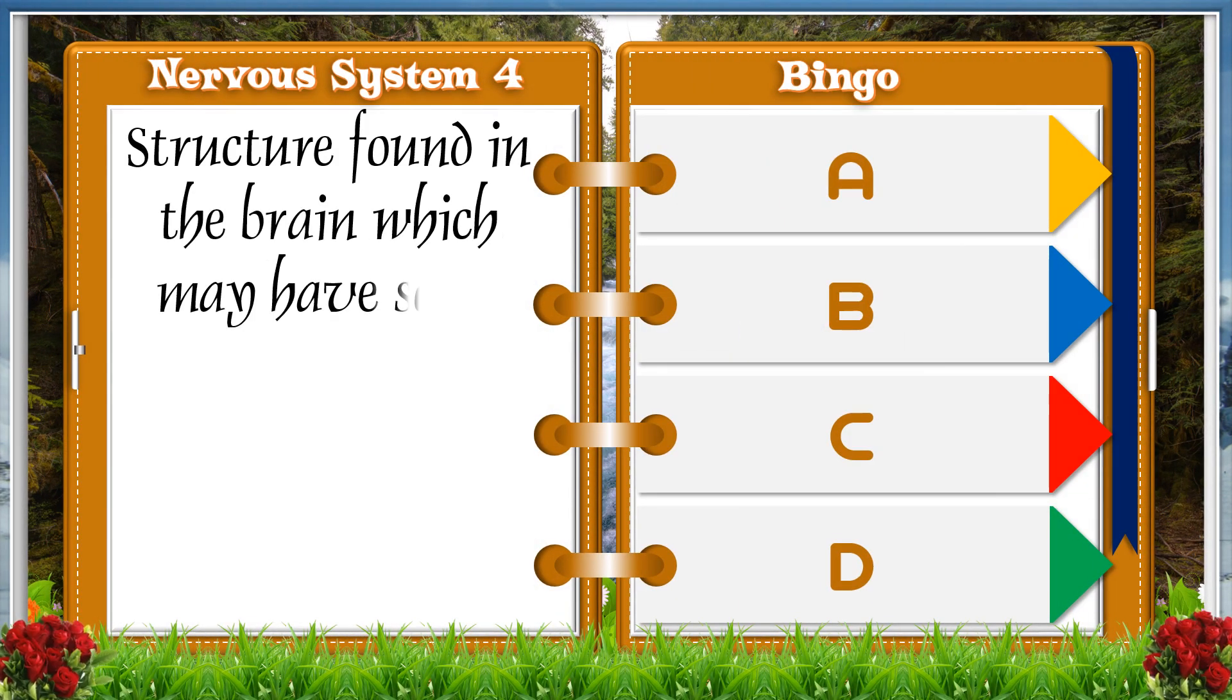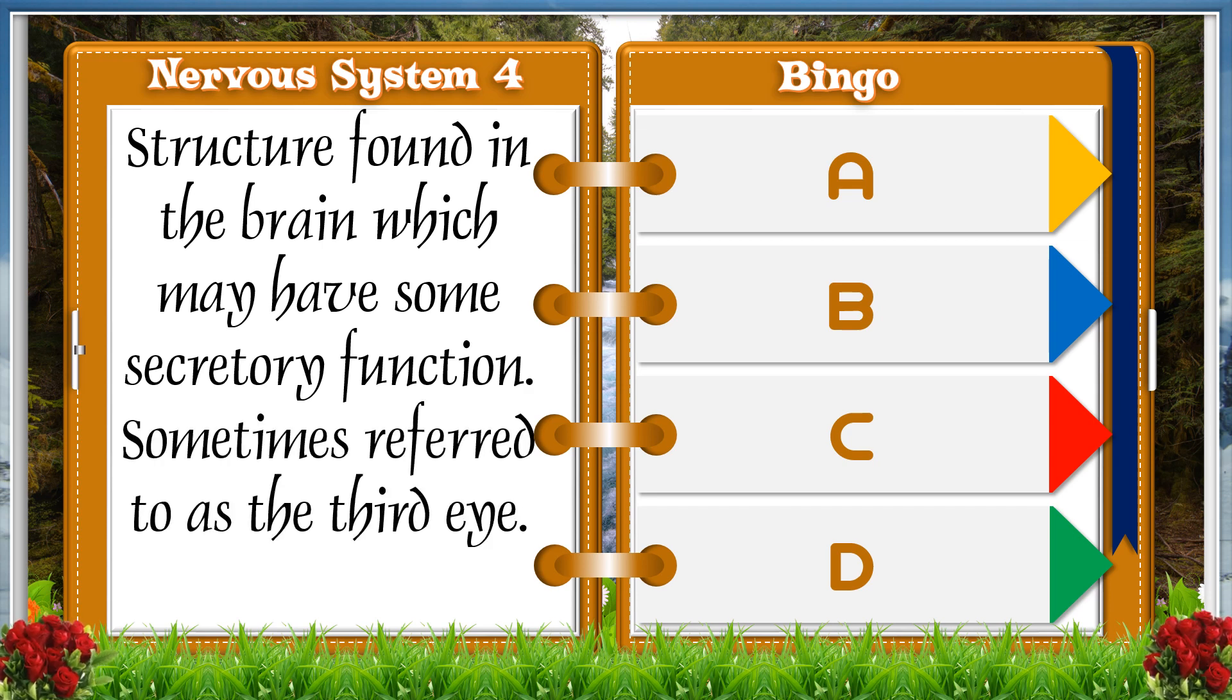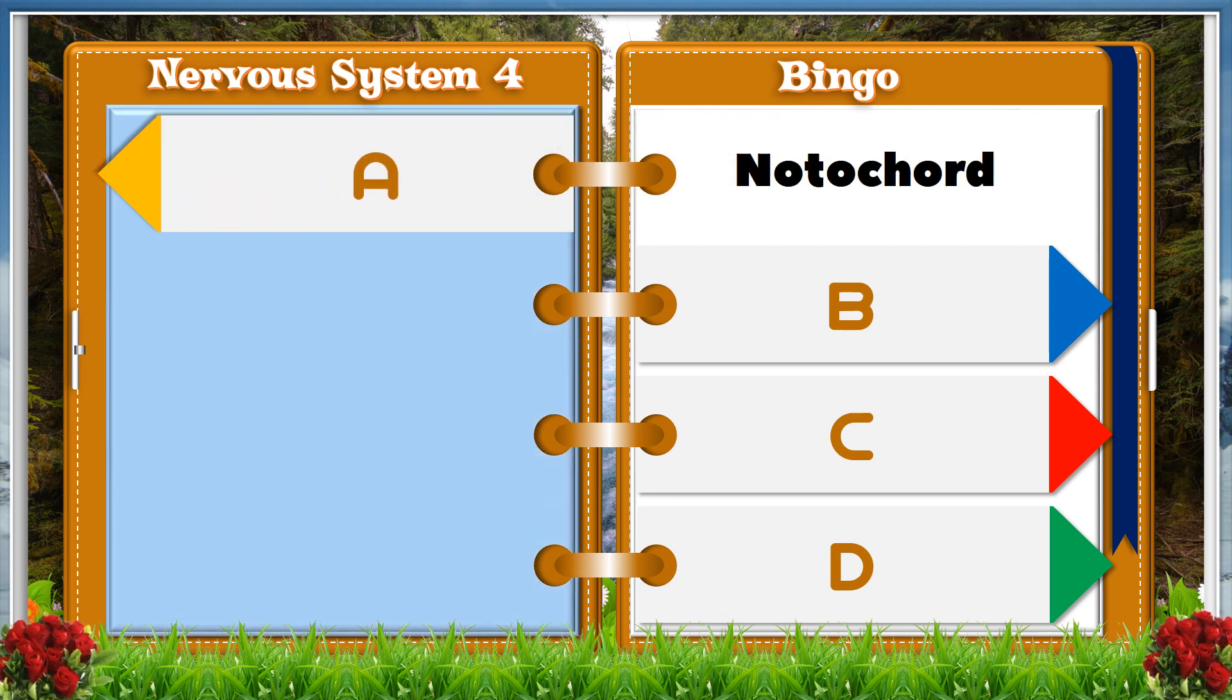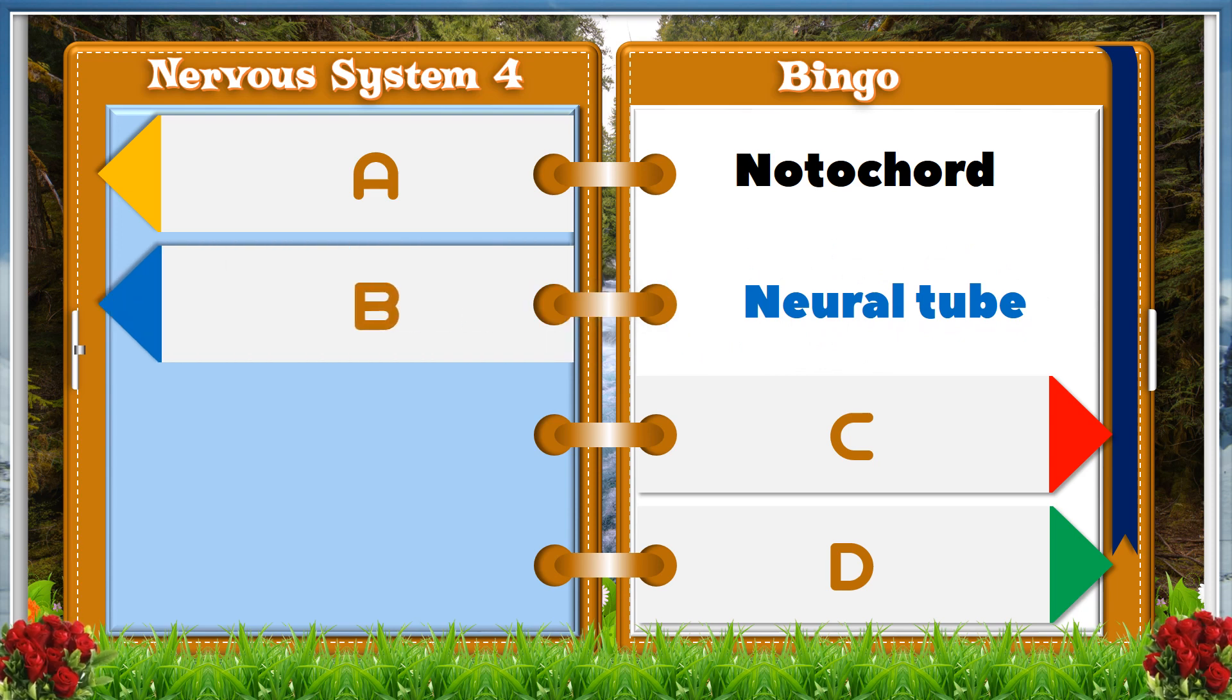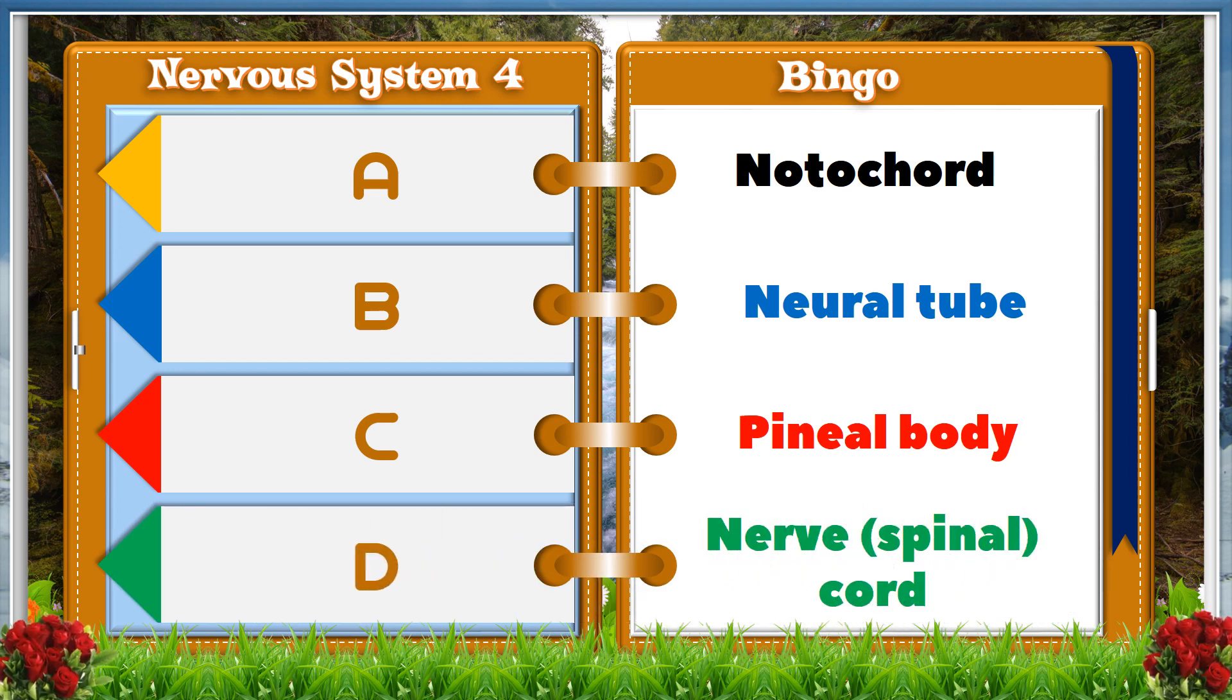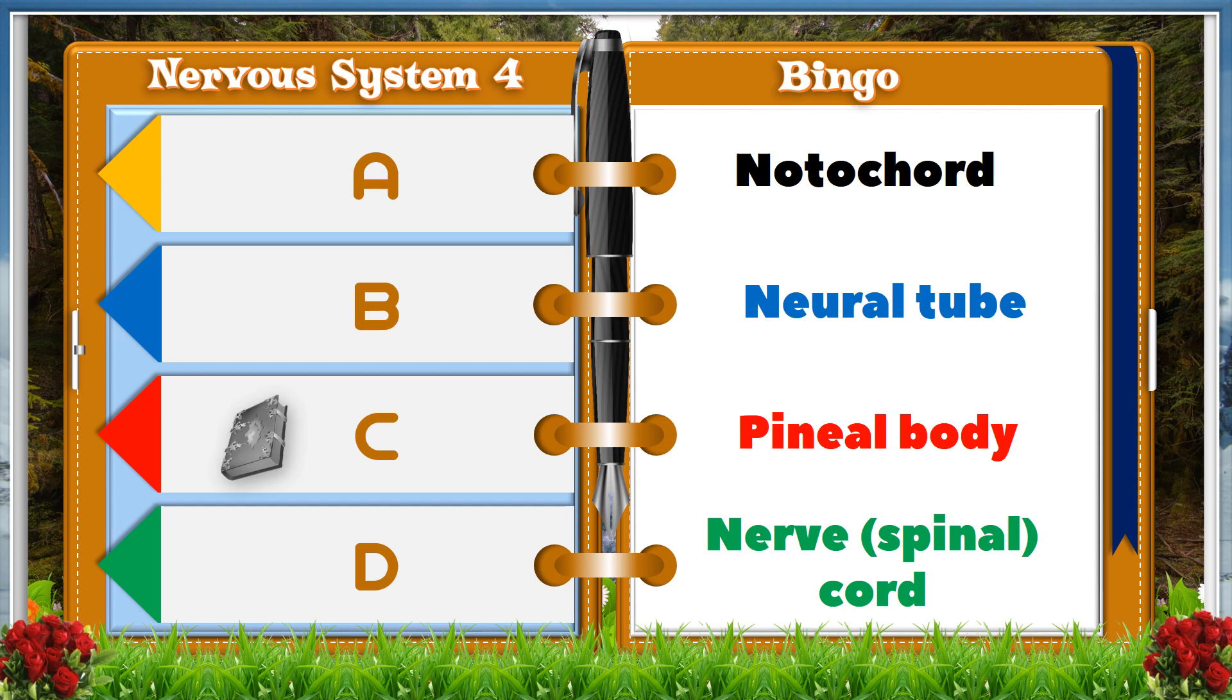Structure found in the brain which may have some secretory function, sometimes referred to as the third eye. A. Notochord. B. Neural tube. C. Pineal body. D. Nerve or spinal cord. And the answer is C. Pineal body.